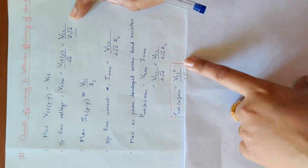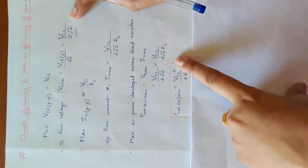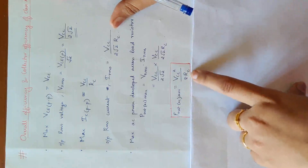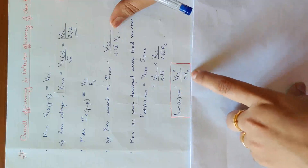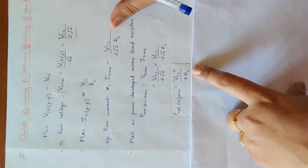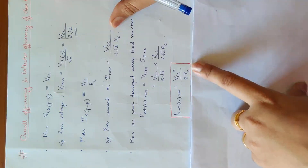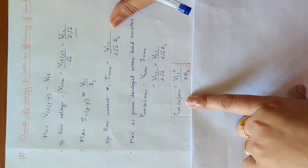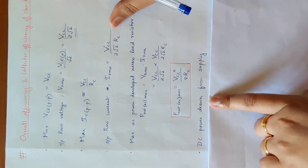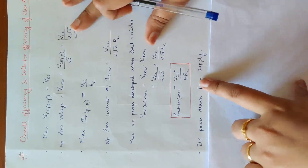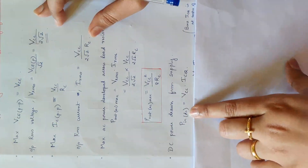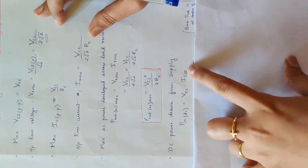So 4 into 2 equals 8RC. The derived maximum output power equation is P_out_AC_max equals VCC squared by 8RC. Now for efficiency: this output power is divided by P_in_DC. DC power drawn from supply: P_in_DC equals VCC into ICQ.